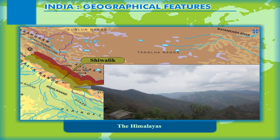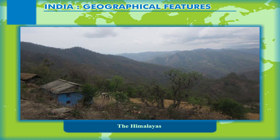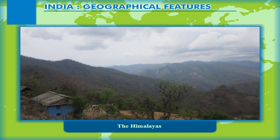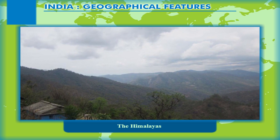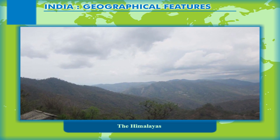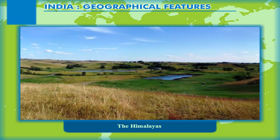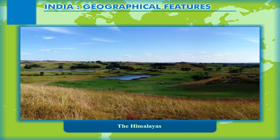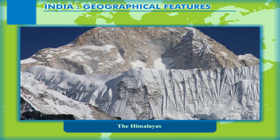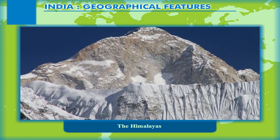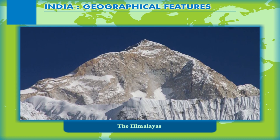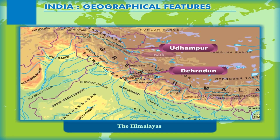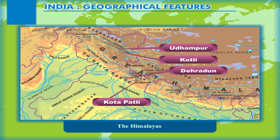The southern slopes are bare and rugged whereas the northern slopes have thick vegetational growth. The Outer Himalayas or Shivalik is the southernmost range of the Himalayas, extending from the Potwar Plateau in the west in Jammu and Kashmir, up to the Brahmaputra Valley in the east. To their south lie the great northern plains of India. The southern slopes of the Shivaliks are much steeper than the northern slopes. These foothills are made up of fluvial deposits, and several valleys like Dehradun, Udhampur, and Kotli in Jammu and Kashmir, and Kota Patli and Chokhamba in Uttarakhand lie here.